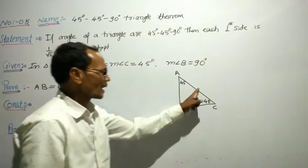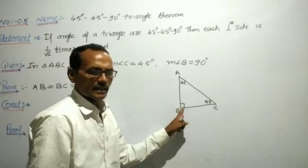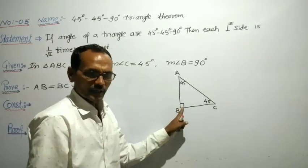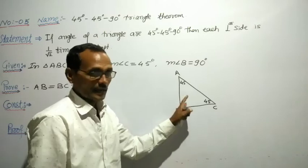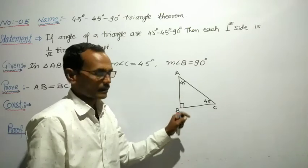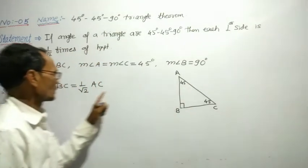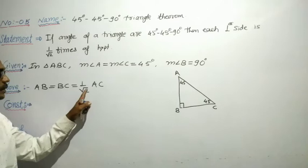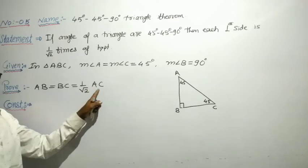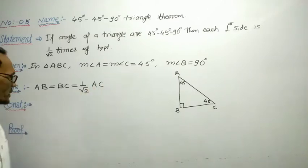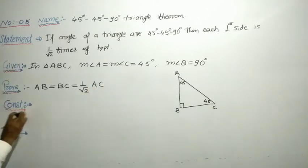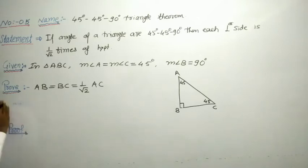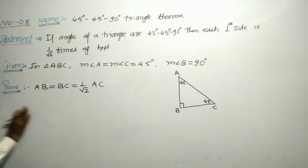The side opposite to the right angle is known as the hypotenuse in a right angle triangle. And we want to prove that each perpendicular side equals 1 by root 2 times the hypotenuse. There is no construction needed; I can write a direct proof.